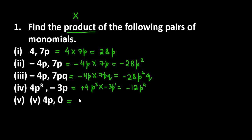Now you have 4p multiplied by 0. Any number multiplied by 0 gives 0 only. So this is how you can do multiplication of two monomial terms. We will start with question number 2 now.